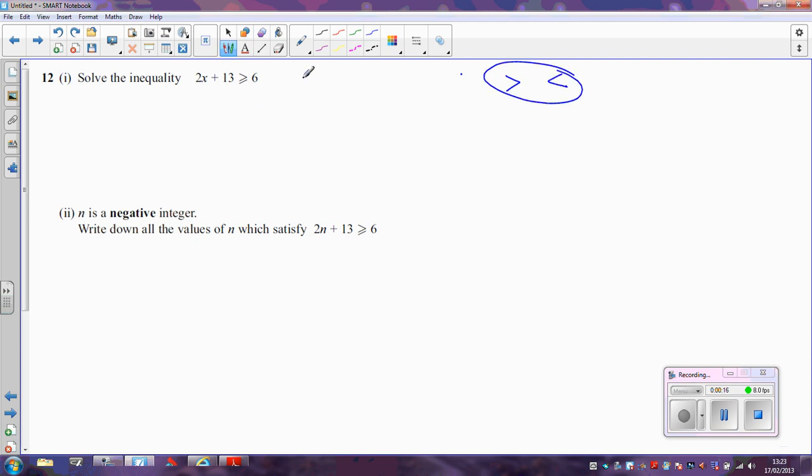So let's have a look at how we do this one. First of all, I'm going to subtract 13 from both sides. So on the left hand side I'm now going to have 2x, and on the right hand side I've now got 6 take away 13, which is minus 7.